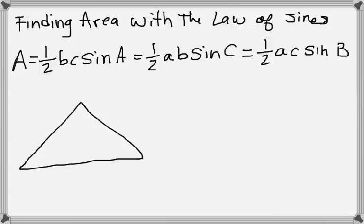or one-half AC sine B. If you notice, with the two sides you're using, pick any two you want, and just make sure to pick the angle of the letter that you didn't use. So any way you want to pick it, it works.